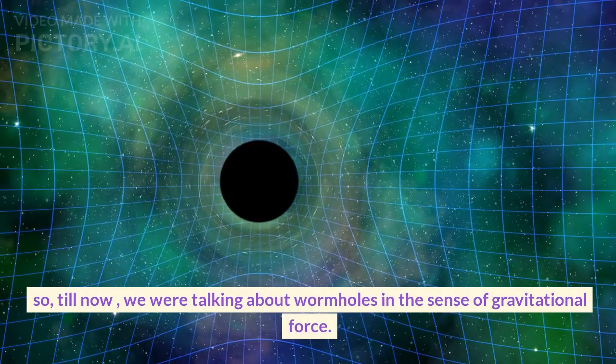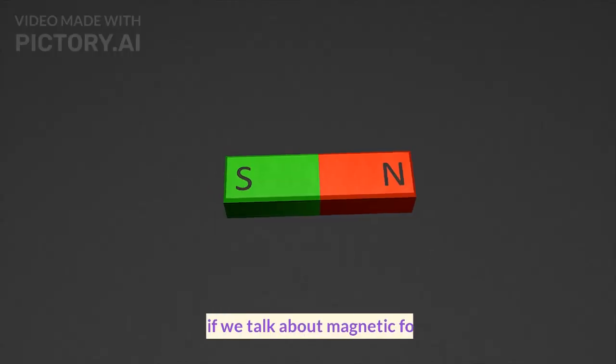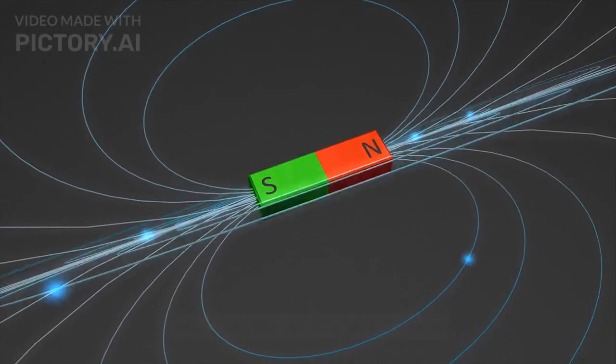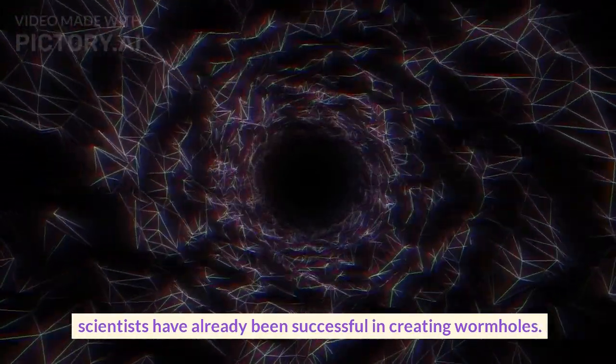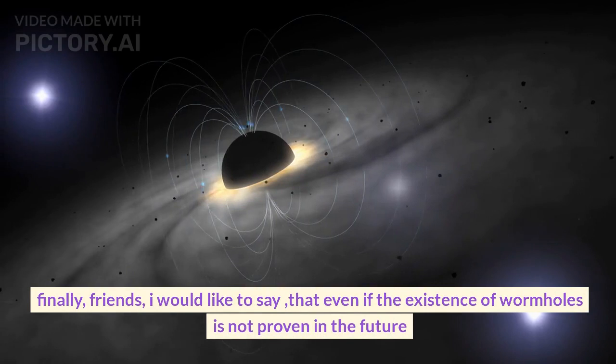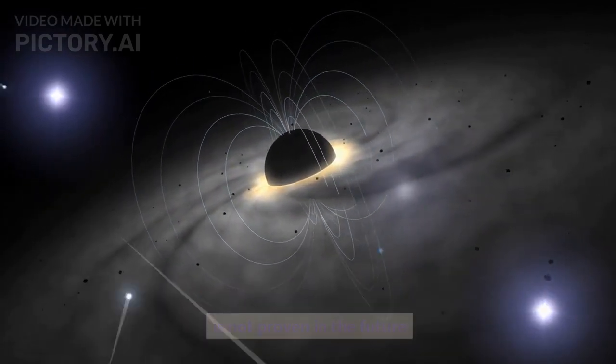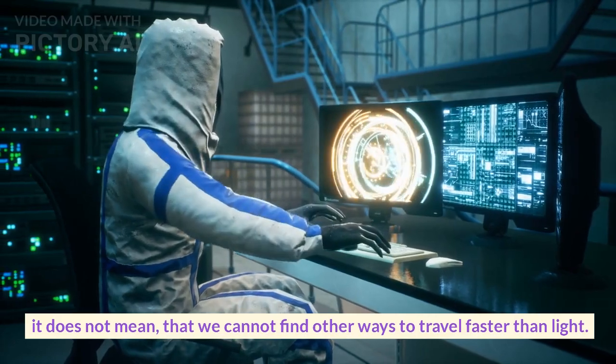So till now we were talking about wormholes in the sense of gravitational force, but if we talk about magnetic force, scientists have already been successful in creating wormholes. Finally friends, I would like to say that even if the existence of wormholes is not proven in the future, it does not mean that we cannot find other ways to travel faster than light.